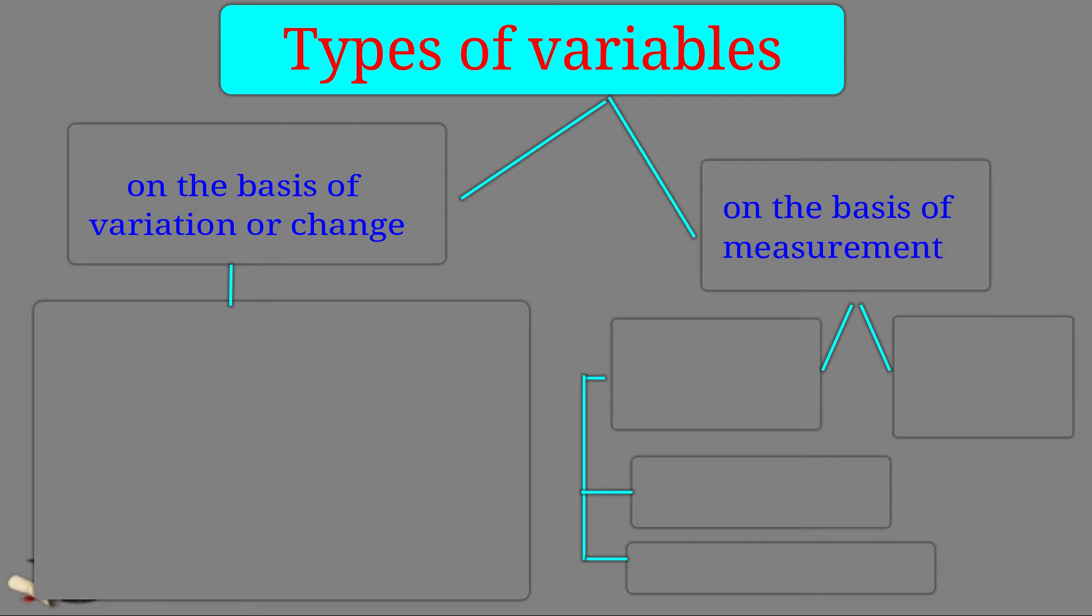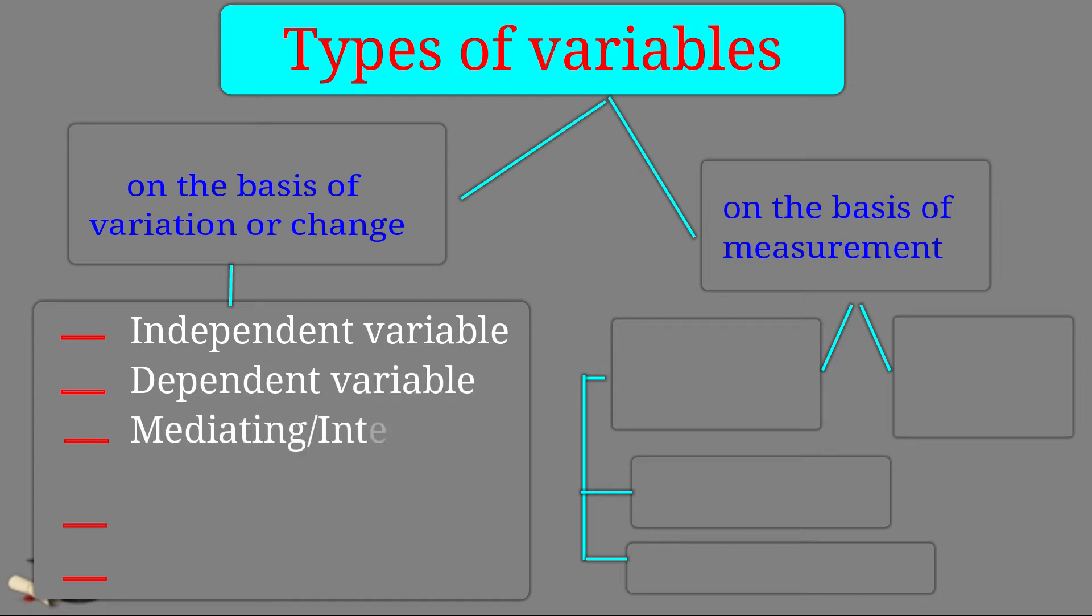Number one, on the basis of variation or change, variables can be of at least five types. Number one, independent variable. Dependent variable. Mediating or intervening variable. Moderating variable. Extraneous variable.